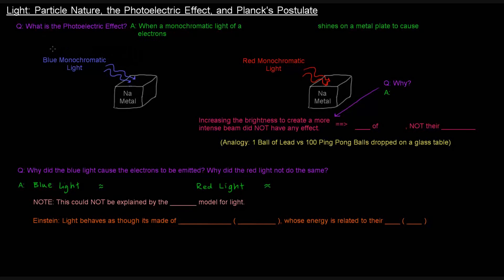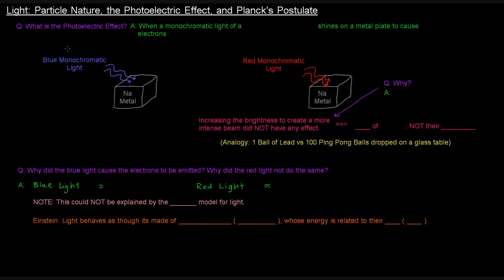Now that we've discussed the wave nature of light, let's talk about the particle nature of light, as well as the photoelectric effect and Planck's postulate. So what is the photoelectric effect? Let's think about this situation here. We've got a little cube or block of sodium metal, and we're going to shine some light on it. In one case, we'll shine blue monochromatic light, and in another case, we'll shine red monochromatic light.